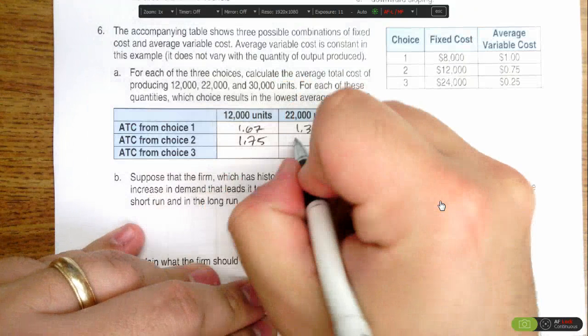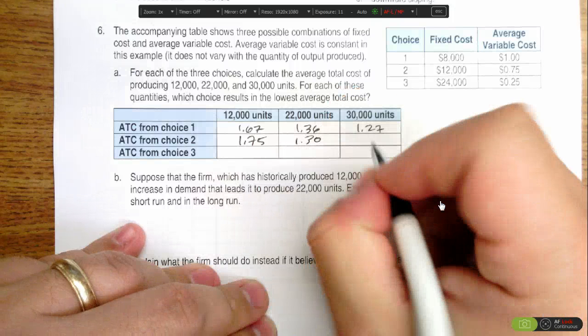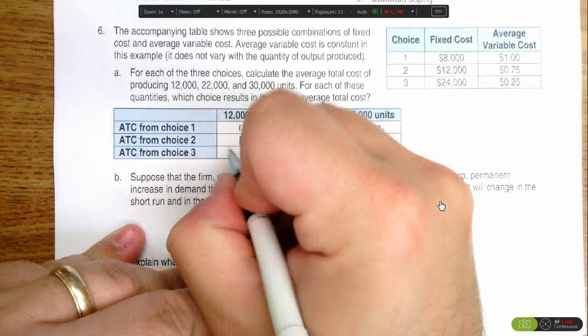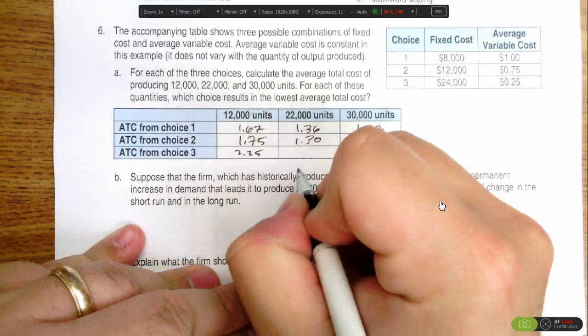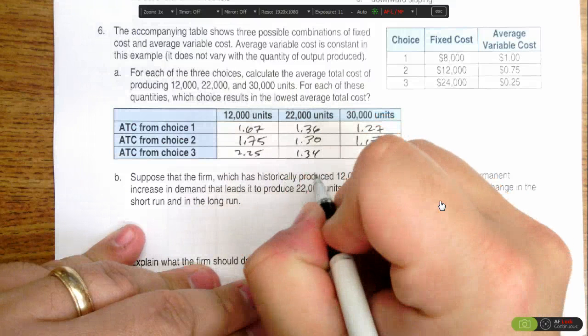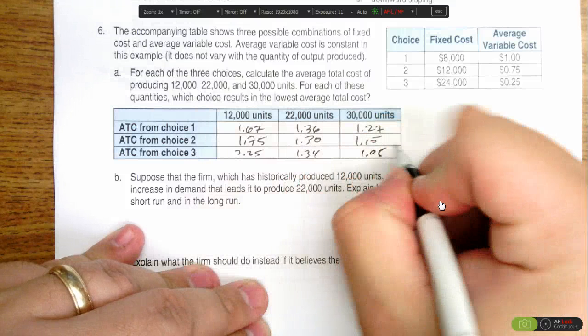If you continue that same process, you find it's $1.30 for 22,000 units and $1.15 for 30,000 units. Choice three is $2.25 for 12,000 units, $1.34 for 22,000 units, and $1.05 for 30,000 units.